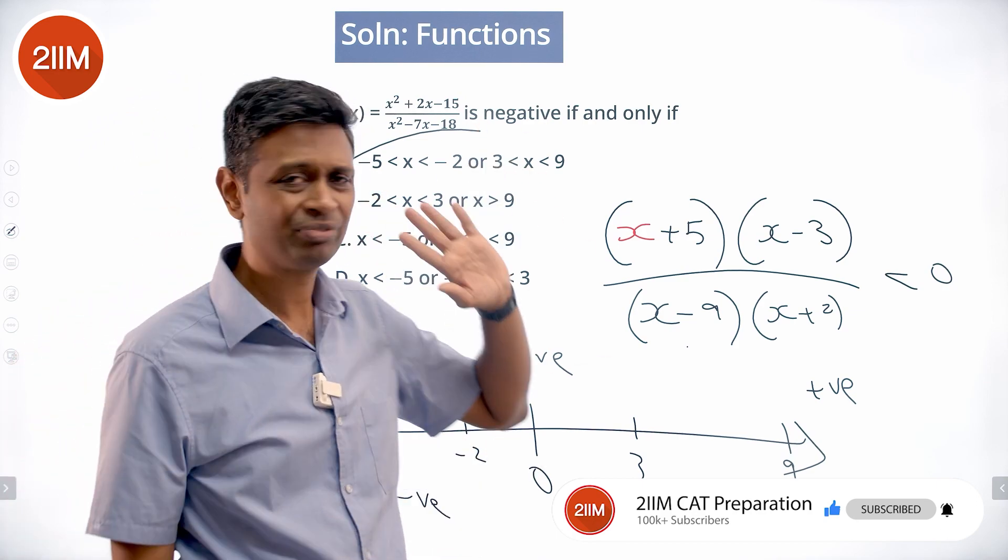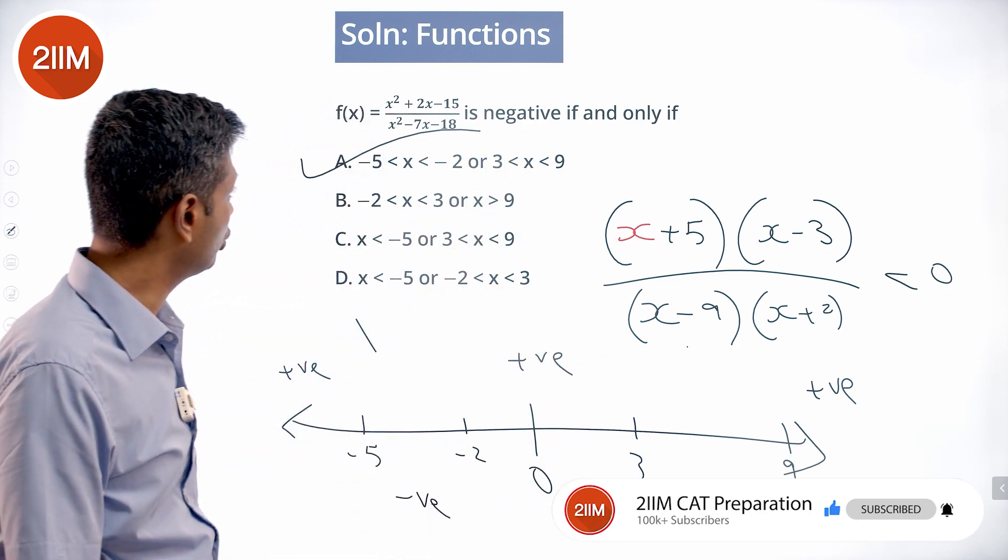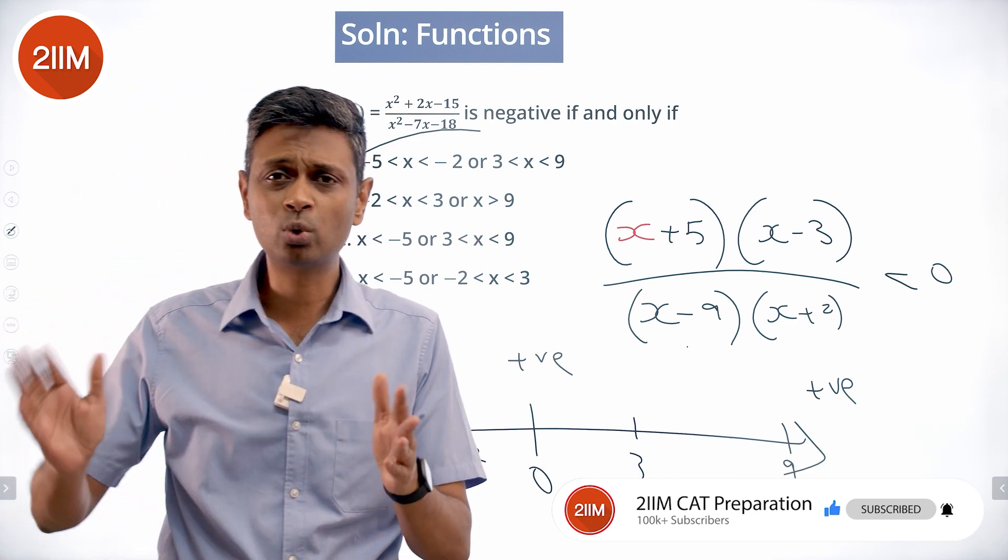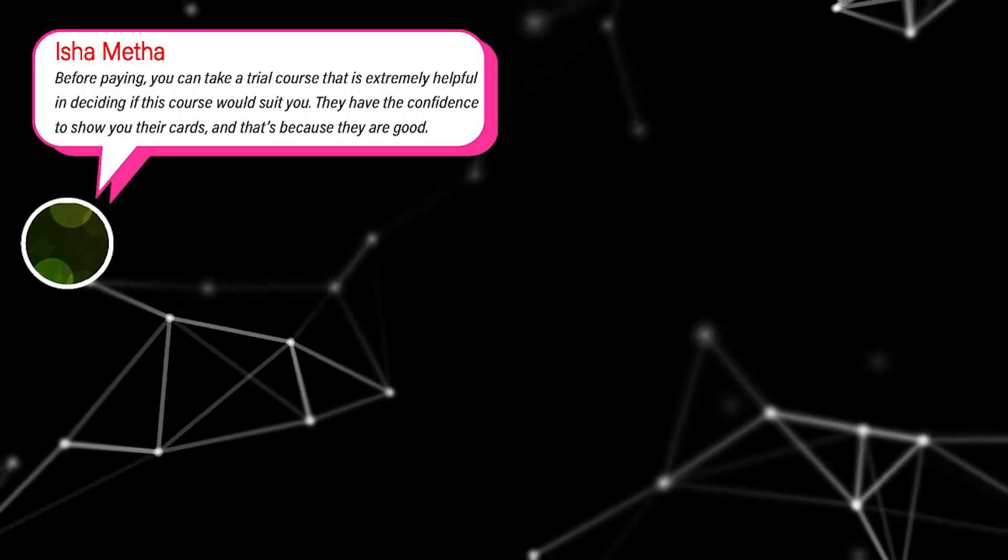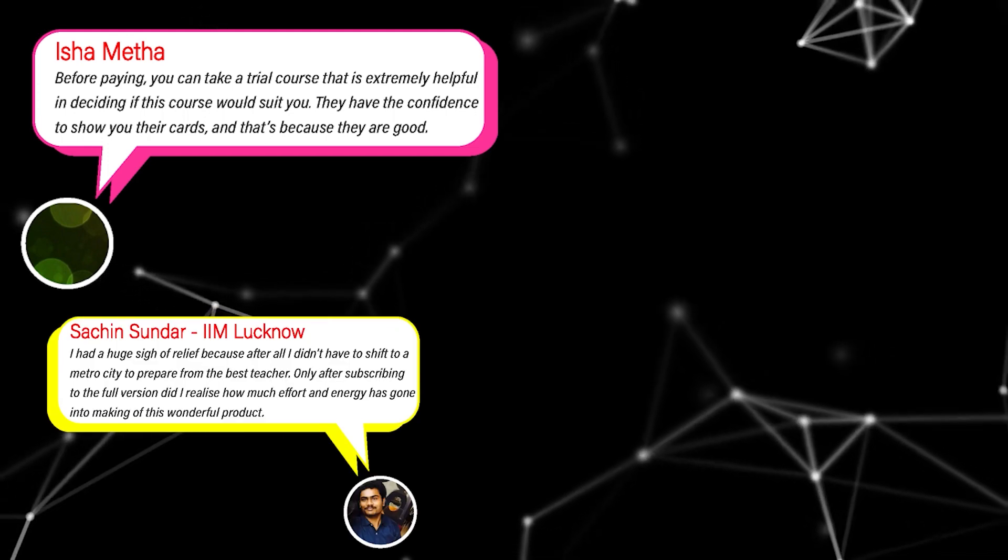Final answer: -5 to -2 and 3 to 9. Find all the roots - they are the turning points - and we are done after that.